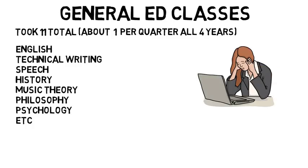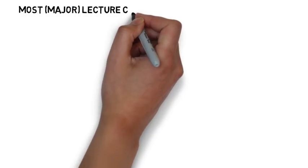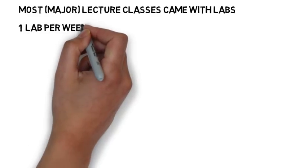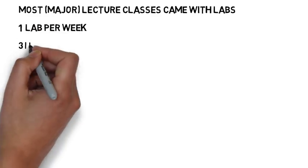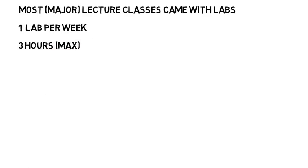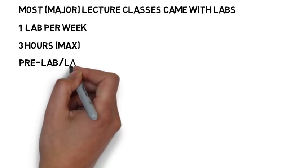Then going back to the engineering curriculum, for most of my lecture classes, for my major that is, they came with labs. But not every single one did. I usually had one lab per week for the classes that did have one. The lab class would go for three hours, but we would usually finish before that time and were able to just leave. Then each lab came with a required pre-lab and a lab report.